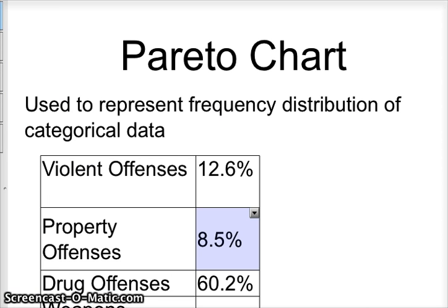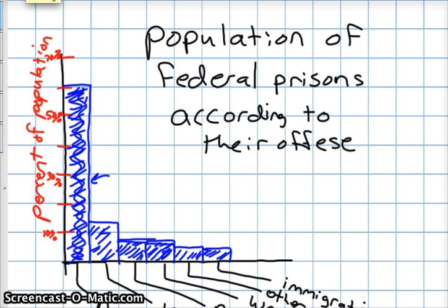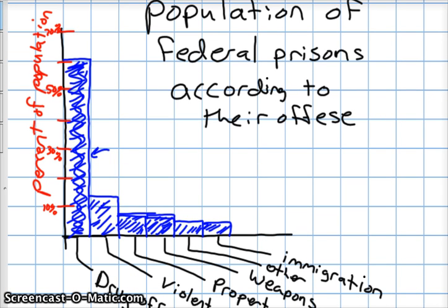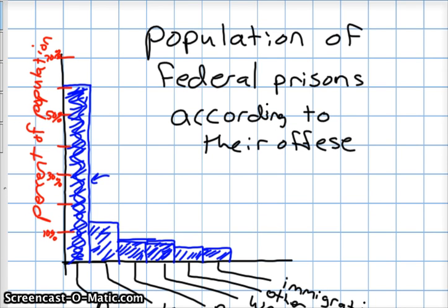That's all you have to do for a Pareto chart. They're pretty easy and really kind of nice, because they show you the nitty gritty — what you need to be looking at first. Drug offenses are obviously — there are a whole bunch more people in there for drug offenses than any of the others. Lawmakers could go in and say, well, we need to have tougher drug laws or something like that. Hope that helps. Good luck, and see you next time.